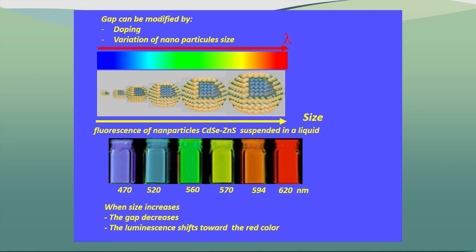When we reduce or tune the size of particles, the band gap is generated. As you can see in this example, when the dimension varies from a lower value to a higher value, we have a variation of wavelength accordingly. So we can tune the size of the particles, we can tune the band gap, and the position of the conduction band.